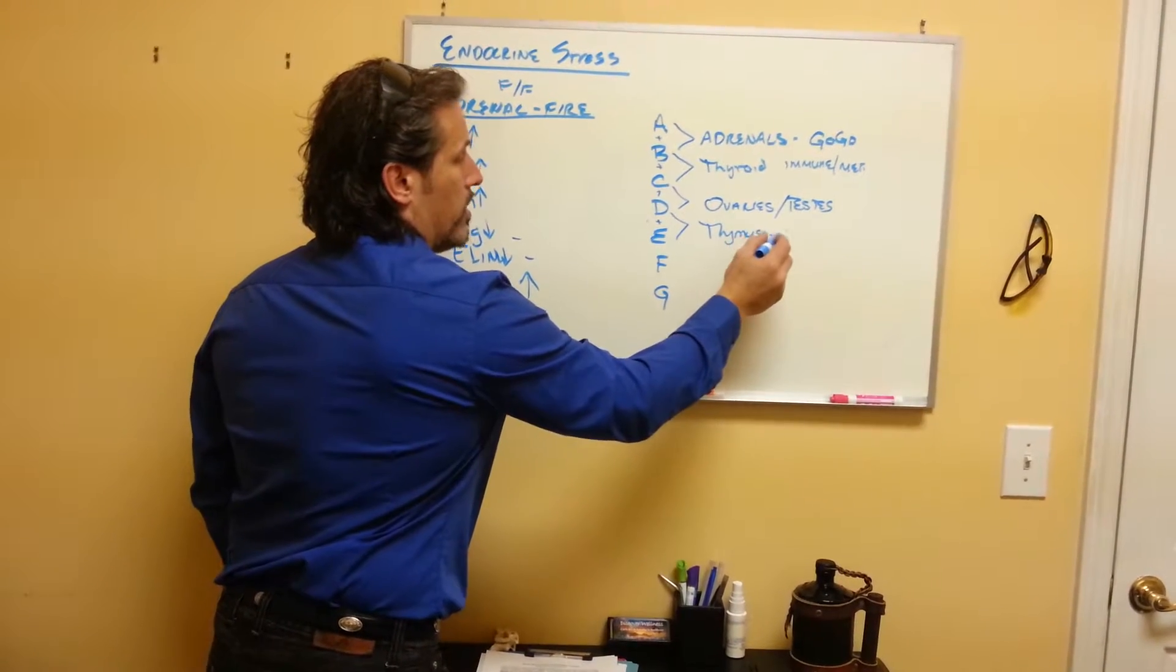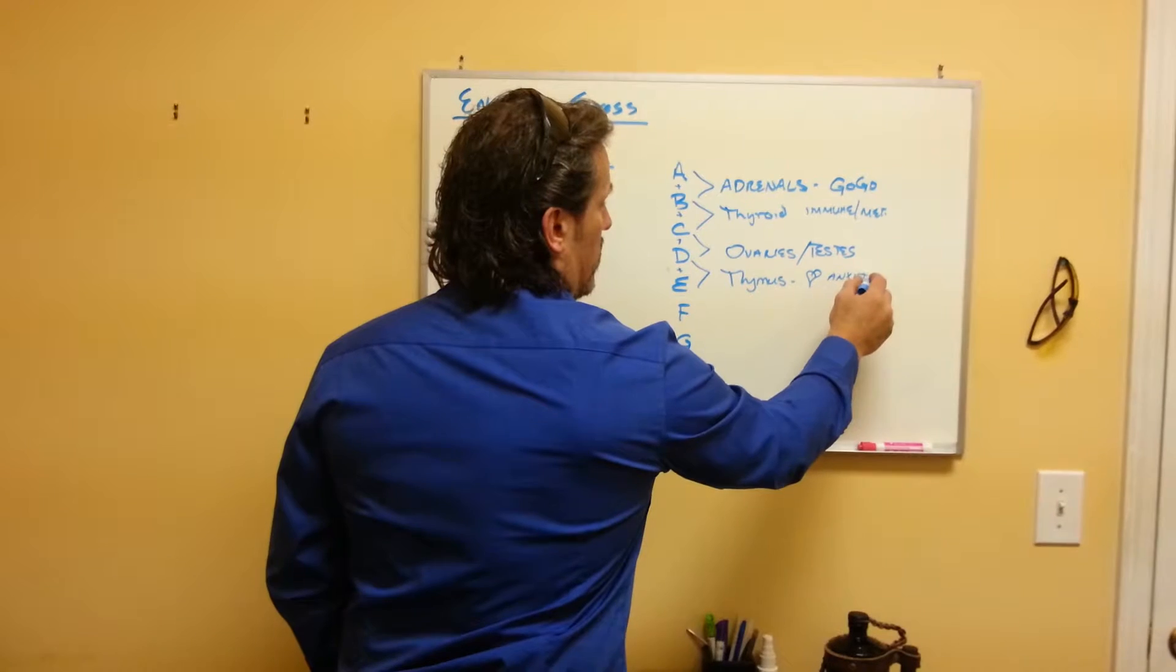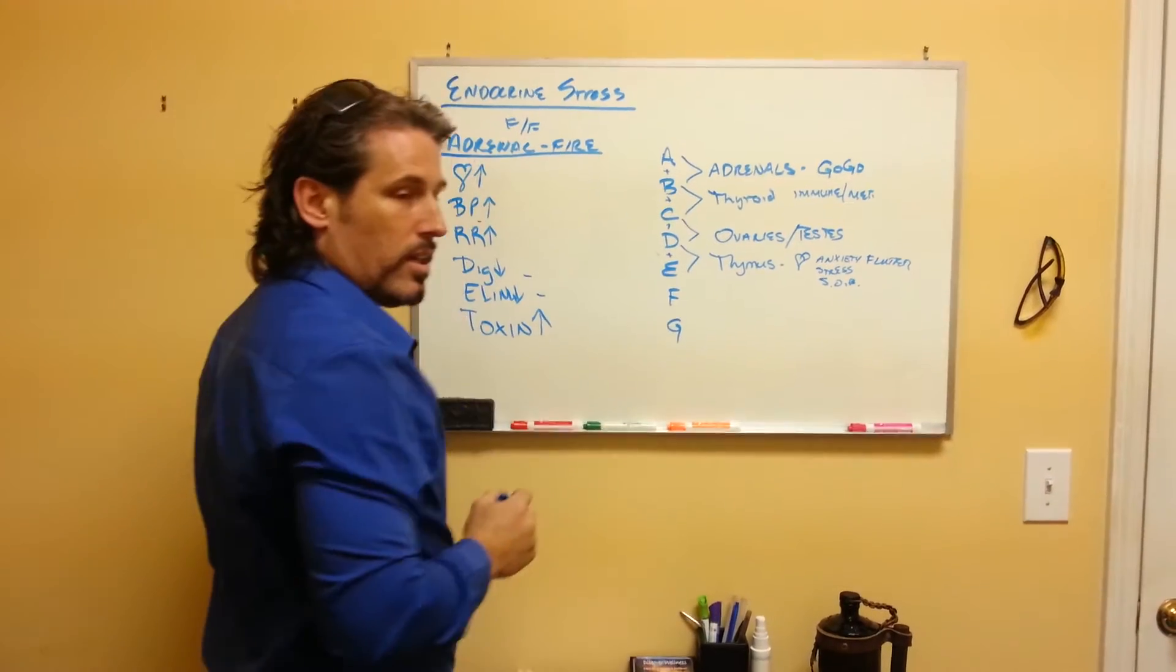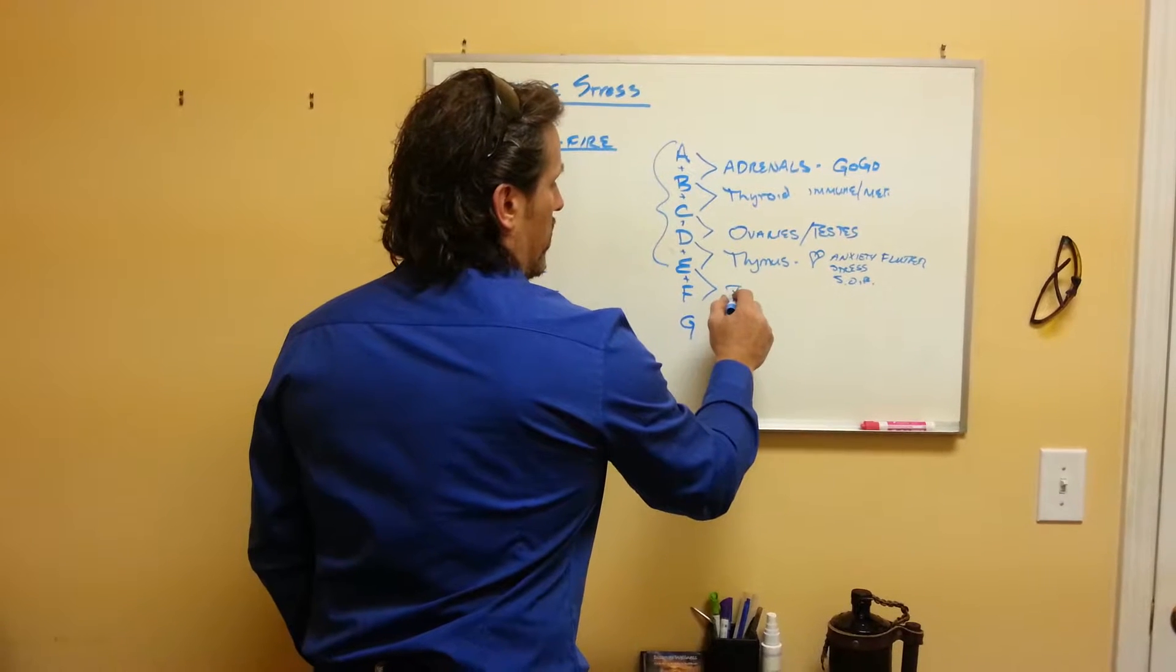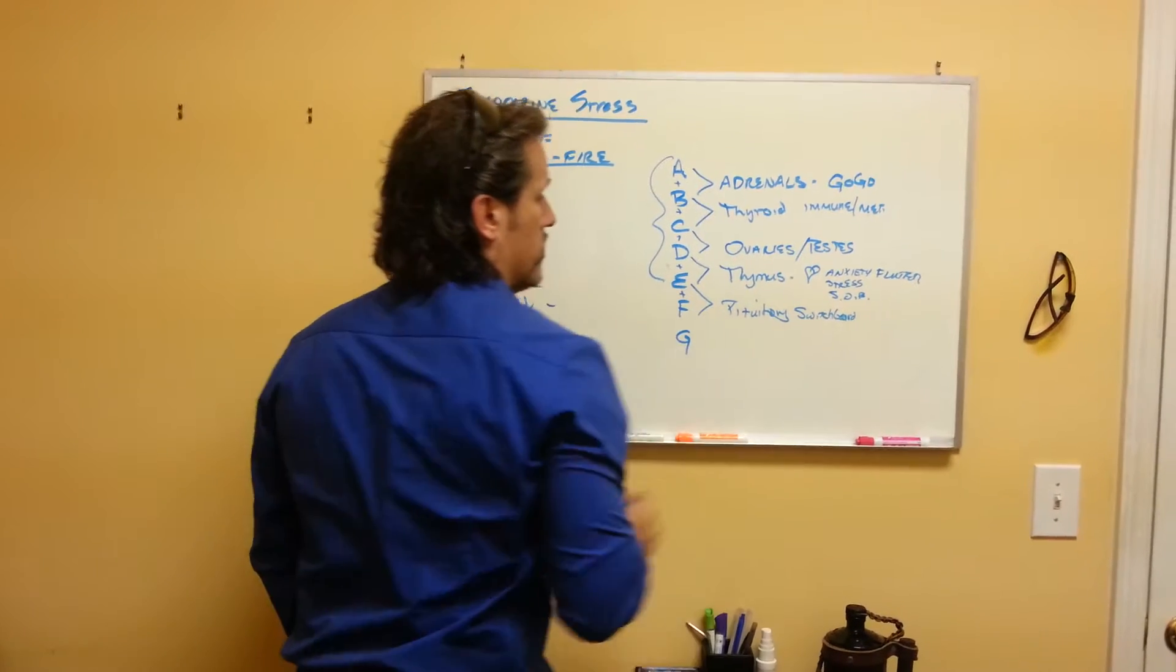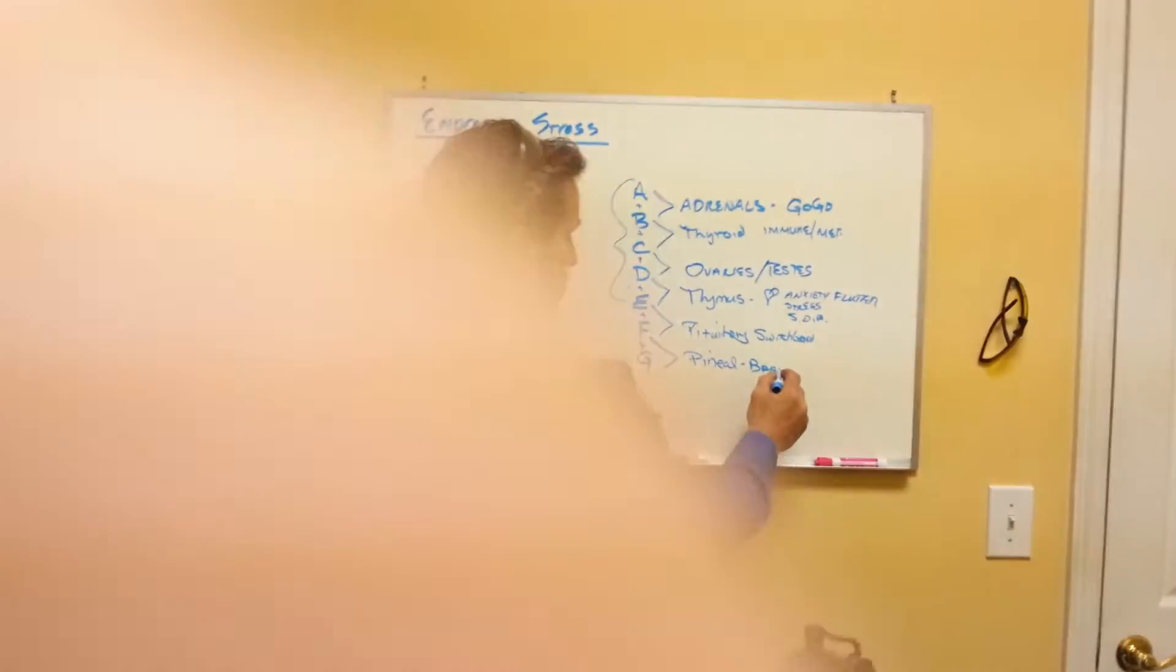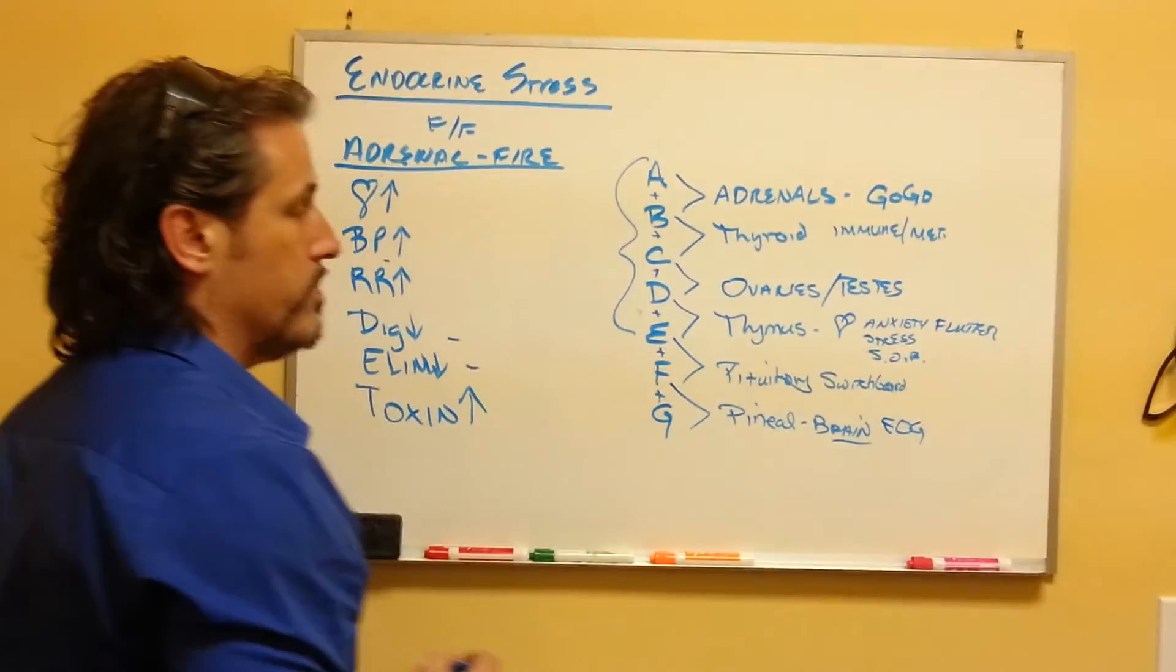From there it'll bounce back up and start to stress the thymus. The thymus is associated with heart. And this is where people will get levels of anxiety, stress, shortness of breath. The heart might flutter, different things like that. These are regulated predominantly by the pituitary. That's the switchboard operator. When it becomes too backed up, too stressed out, it goes and it'll start to tax the pineal gland, which is basic brain function. And if it's not working right or it becomes stressed, you end up with brain fog.